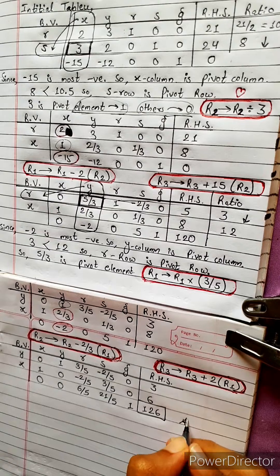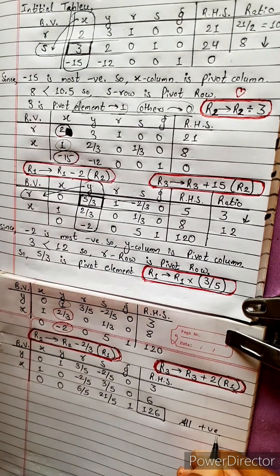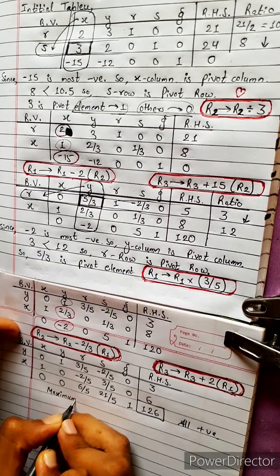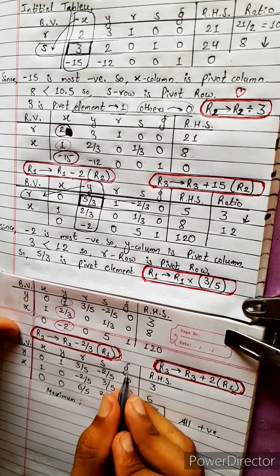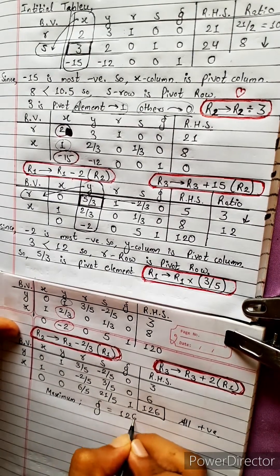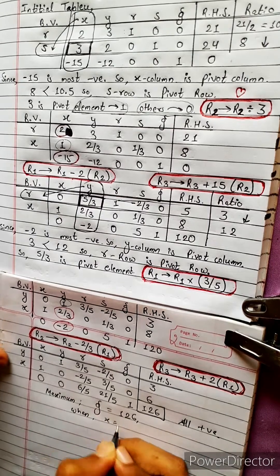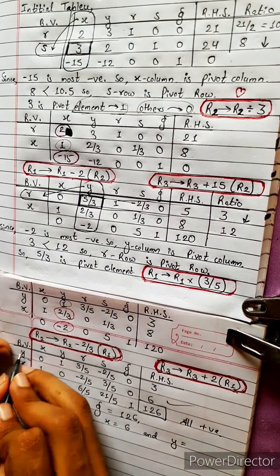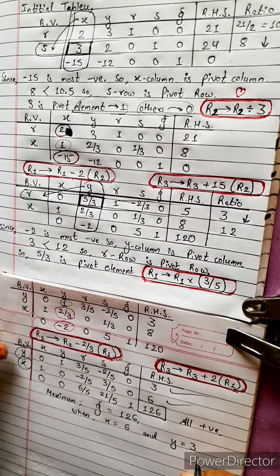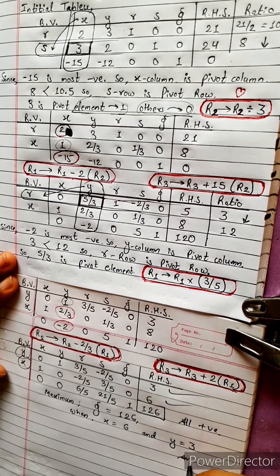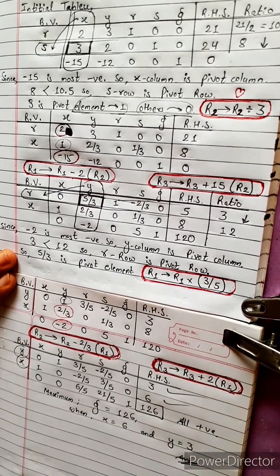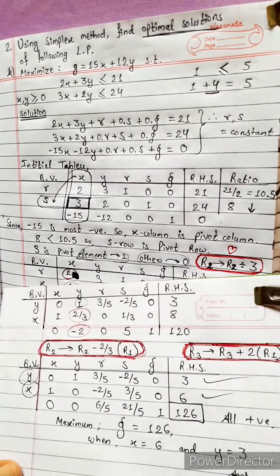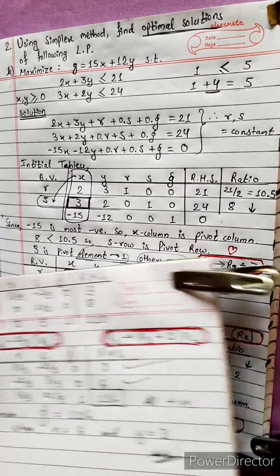All elements in the third row are positive, which means we have reached the maximum value. The solution is x equals 6, y equals 3. That's the right answer — this completes the first phase and the second phase. Bye bye.